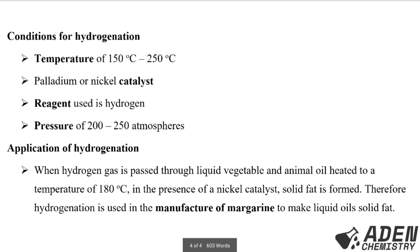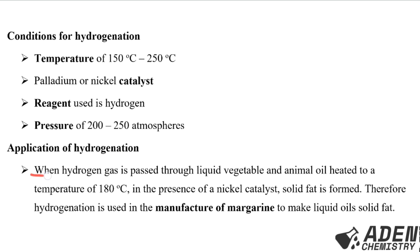Conditions for hydrogenation: temperature of 150–250°C, a nickel or platinum catalyst, hydrogen gas as reagent, and pressure of 200–250 atmospheres. Application: when hydrogen gas is bubbled through liquid vegetable or animal oil heated to 180°C in the presence of a nickel catalyst, solid fat is formed. Therefore, hydrogenation is used in the manufacture of margarine — converting liquid oils into solid fats.